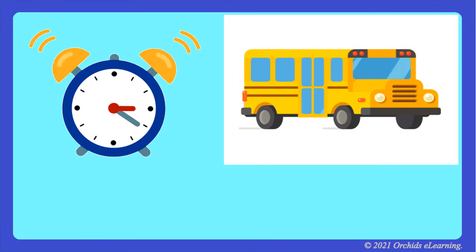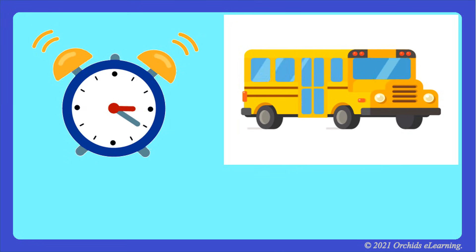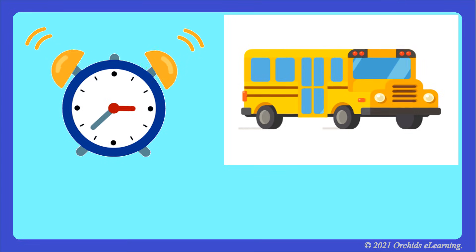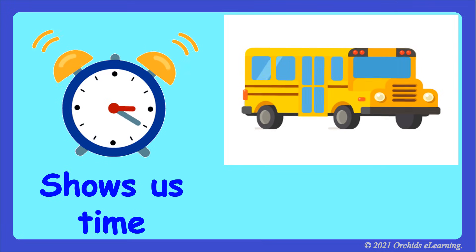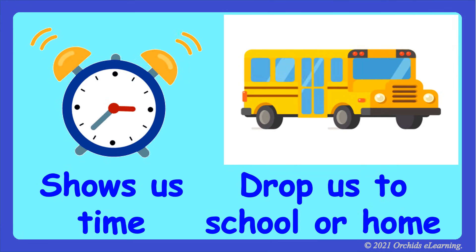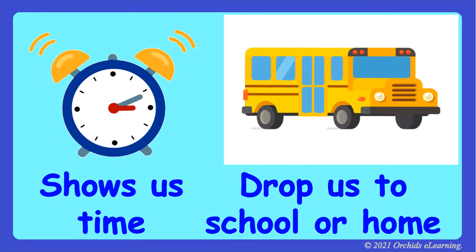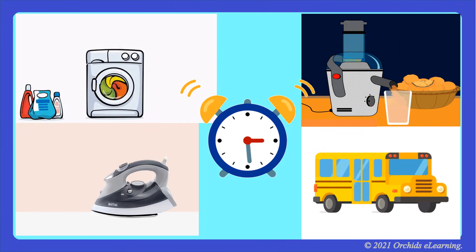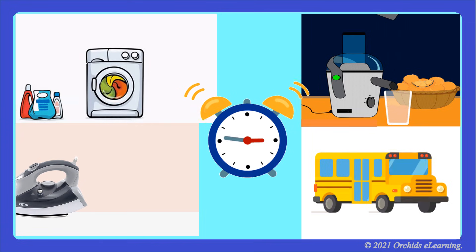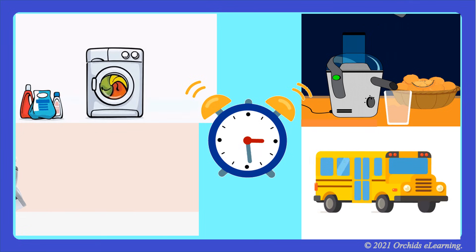Now look at these pictures. What are the name and use of these? These are a clock and a school bus. The clock shows us the time, and the school bus picks and drops us from school to home or home to school. These all are called machines.